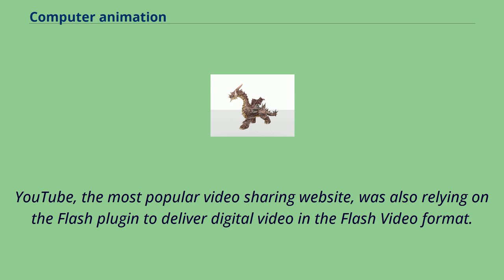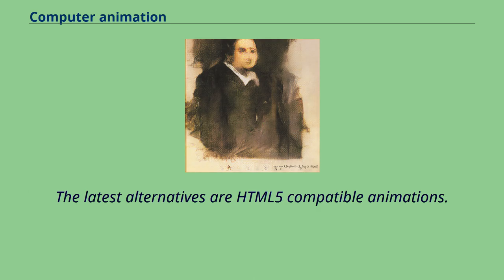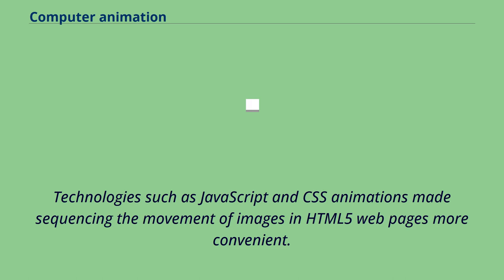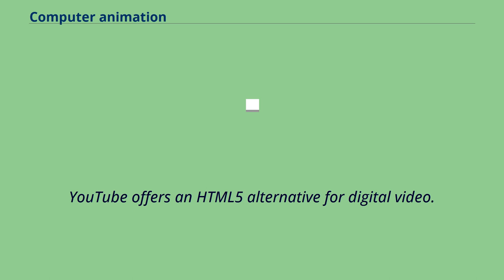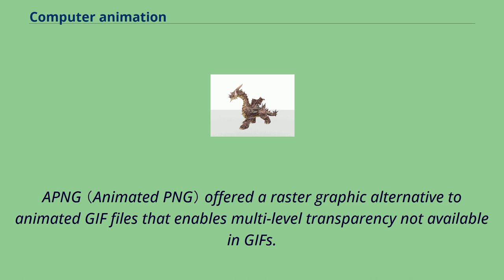YouTube, the most popular video sharing website, was also relying on the Flash plugin to deliver digital video in the Flash video format. The latest alternatives are HTML5-compatible animations. Technologies such as JavaScript and CSS animations made sequencing the movement of images in HTML5 webpages more convenient. SVG animations offered a vector graphic alternative to the original Flash graphic format. YouTube offers an HTML5 alternative for digital video. APNG offered a raster graphic alternative to animated GIF files that enables multi-level transparency not available in GIFs.